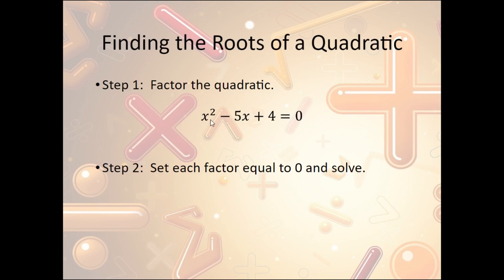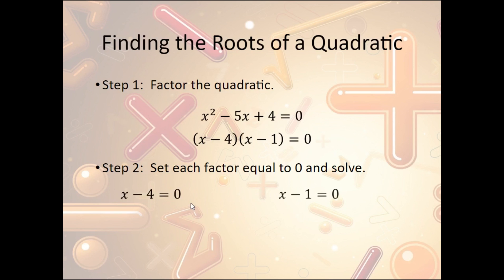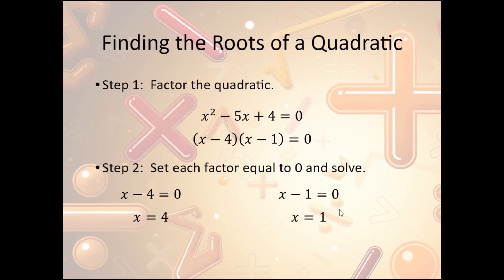So when we have x squared minus 5x plus 4, we would use our magic x. We find that x minus 4 times x minus 1 equals zero. We take each part and set it equal to zero: x minus 4 equals zero, and x minus 1 equals zero. Adding 4 to both sides gives x equals 4, and adding 1 to both sides gives x equals 1. So the zeros, roots, or x-intercepts for this equation are x equals 4 and x equals 1.